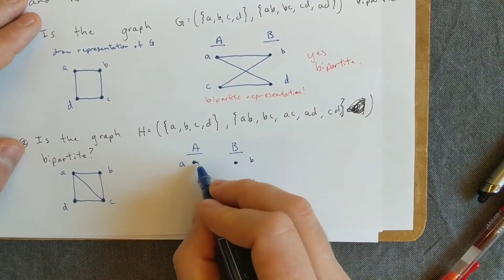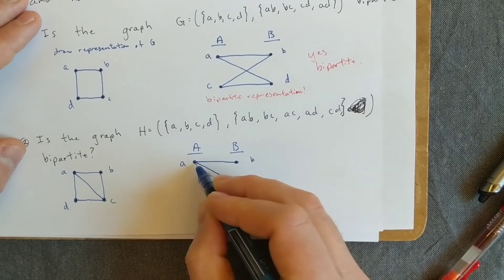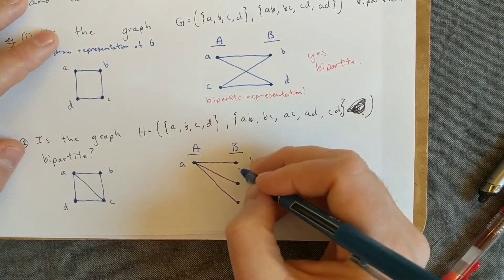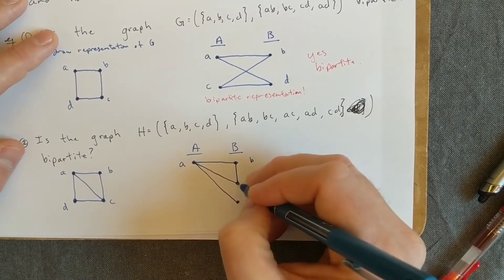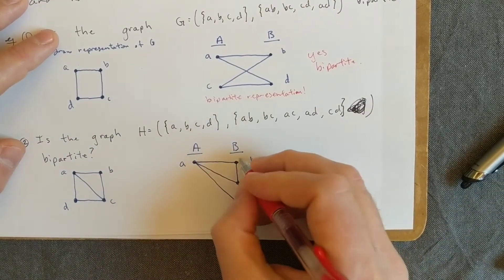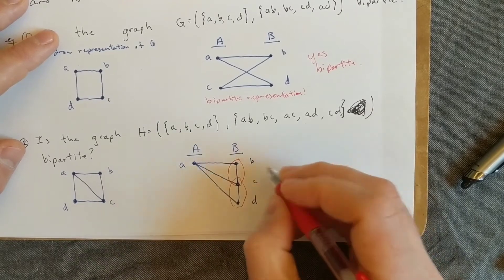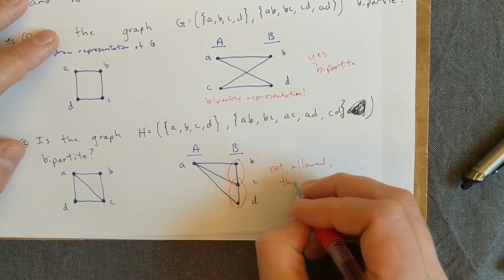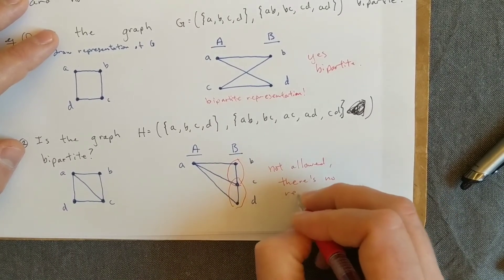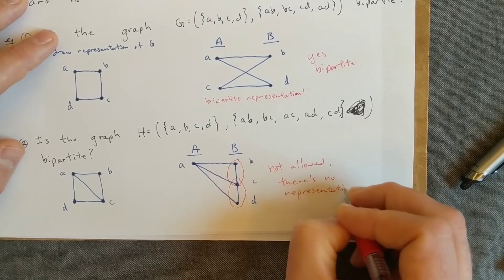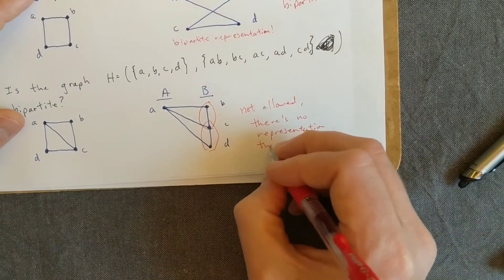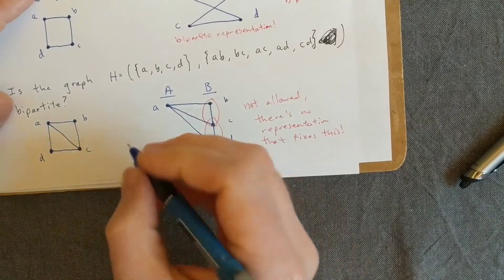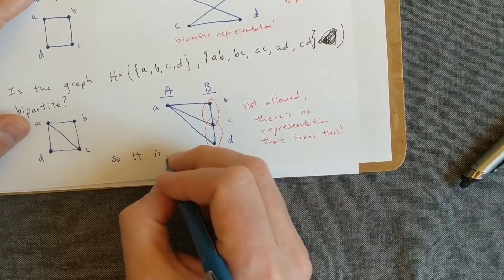However, B and C are connected, and C and D are connected, and this kind of thing is not allowed for bipartite graphs, right? And there's no way to fix this. So H is not bipartite.